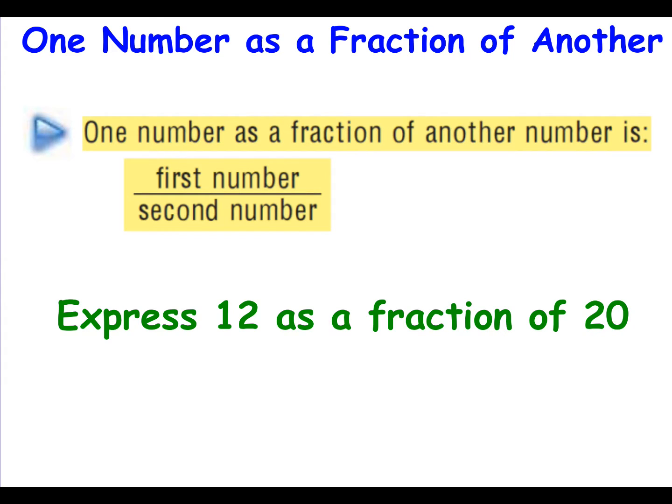So to represent one number as a fraction of another, the first number or smaller number is your numerator and the second number, the larger number, becomes your denominator. So here, express 12 as a fraction of 20, then it would be 12 over 20. Now don't forget what we said earlier. Every time you create a fraction, you have to look at simplifying it.